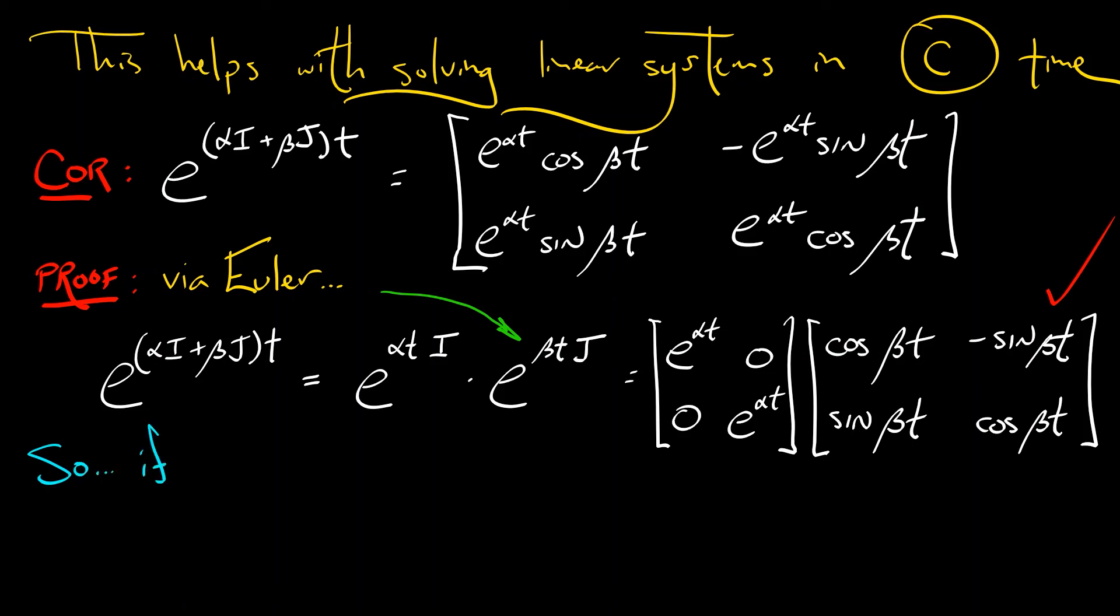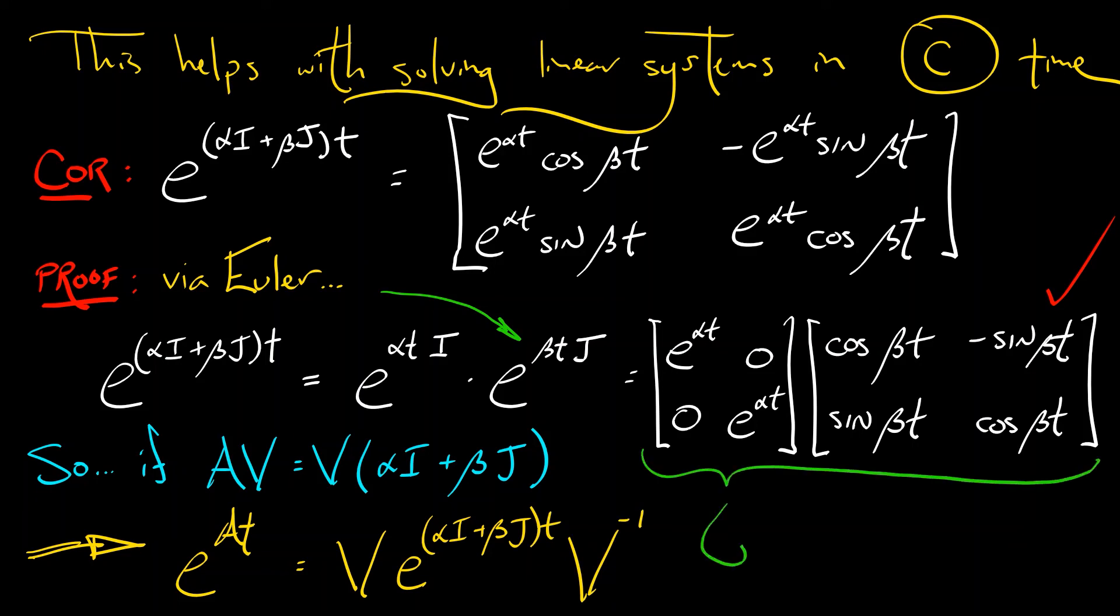So, if you've got a matrix A with complex conjugate eigenvalues, and you write out this matrix capital V to transform it so that AV equals V times alpha I plus beta J, then to exponentiate AT, to compute e to the AT, what you do is you conjugate e to the alpha I plus beta JT by this matrix capital V. We know how to compute e to the alpha I plus beta JT, and that's it. With a bunch of matrix algebra, we're done.